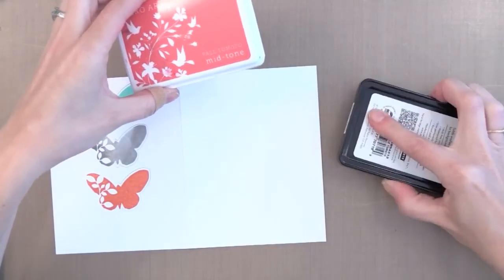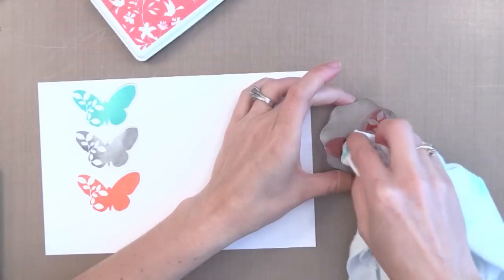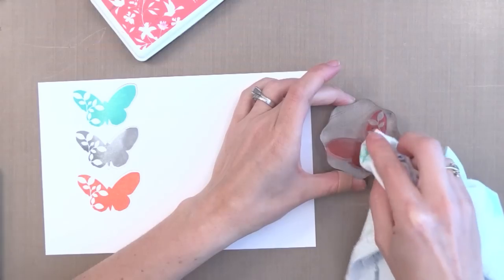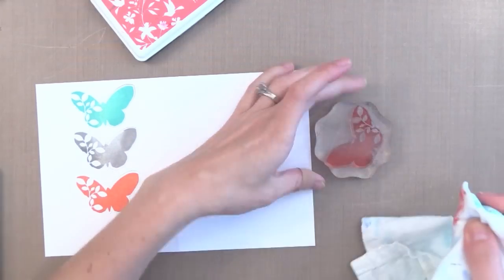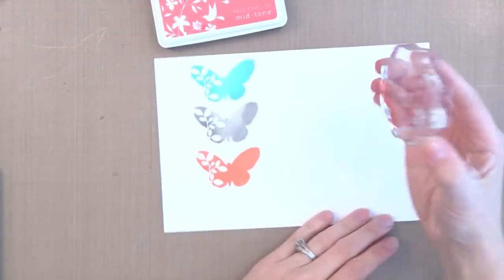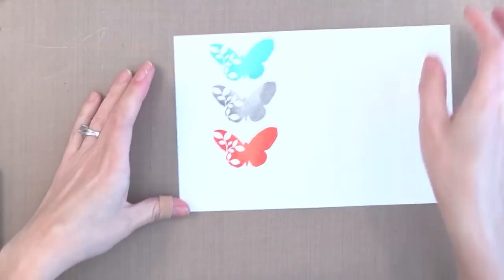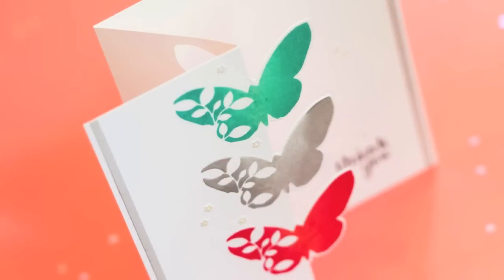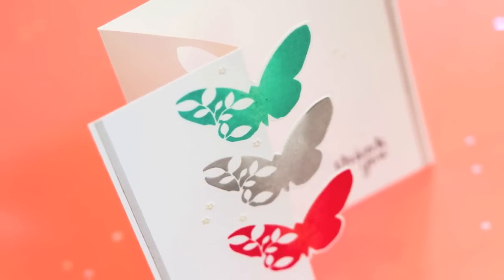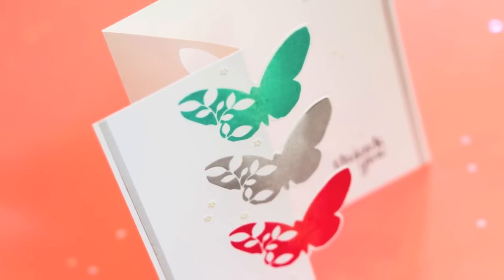Now for the last butterfly, I stamped first with Fresh Peach, which is a little bit lighter. Then I stamped again with Pale Tomato on top of it but removed some of the ink from the center first. There, I finished with my two-tone stamping. If you want more variation, you could go and repeat that second step with the darker ink again if you want to, just to get an even darker look on the edges of the butterfly.